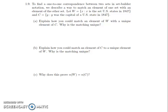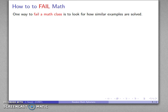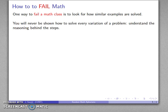Let's take a look at problem 1.9. Before we do that, let's talk about our standard random mathematical aphorism. Today's choice will be a reminder of how to fail a math class. One of the ways to fail a math class is to look for how similar examples are solved. When confronted with a new question, you look for similar examples — this is a guaranteed way to fail because you will never be shown how to solve every variation of a problem.